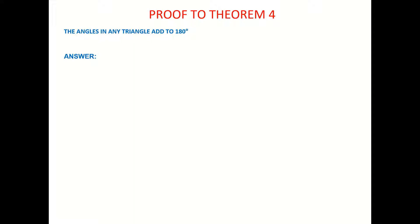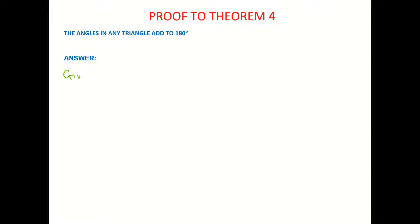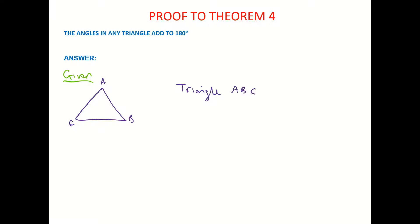The first step in order to prove that the angles in any triangle add up to 180 degrees is to write down what we are given. So we want to state what we are given, and what we are given is basically a triangle. I'm going to call it A, B and C. You don't need to label them the exact same as me — you can call them X, Y and Z, whatever you want. So we're given the triangle ABC, and there are a few marks just for stating what you're given.